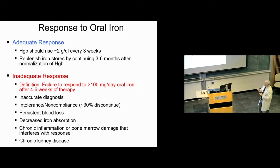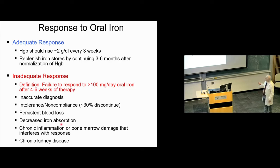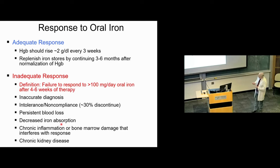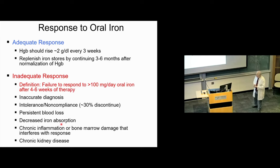The response should be about two grams of hemoglobin every three weeks. Inadequate responses are defined in the literature as failure of 100 milligrams or more of oral iron after four to six weeks of therapy, so you don't have to wait six months to know if someone will respond. Reasons for inadequate response include wrong diagnosis, intolerance, or non-compliance — probably the most common reason people don't respond well to oral iron.